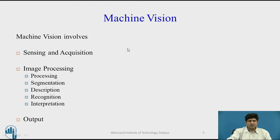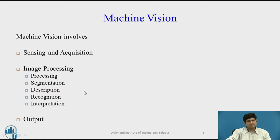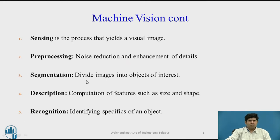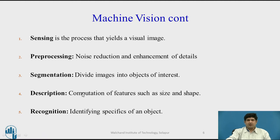Machine vision involves sensing and acquisition of the image, followed by image processing, which may have sub-steps such as processing, segmentation, description of the image, recognition of a pattern, and then interpreting that. Finally, results are output either to a control system or to an operator who can take necessary decisions. Sensing is the process which will yield the visual image. Pre-processing performs noise reduction and enhancement of details. Segmentation divides the image into objects of interest. Description involves computation of features such as size, shape, etc. Recognition involves classifying and identifying those specifics.